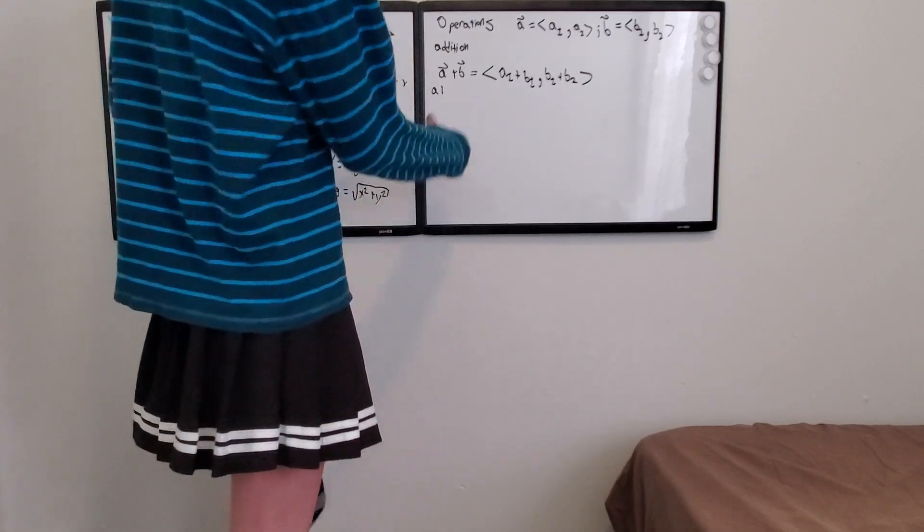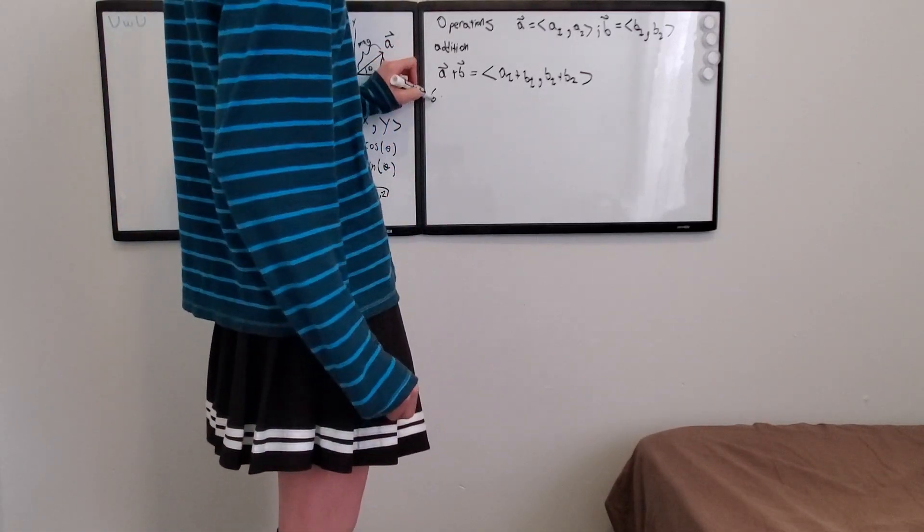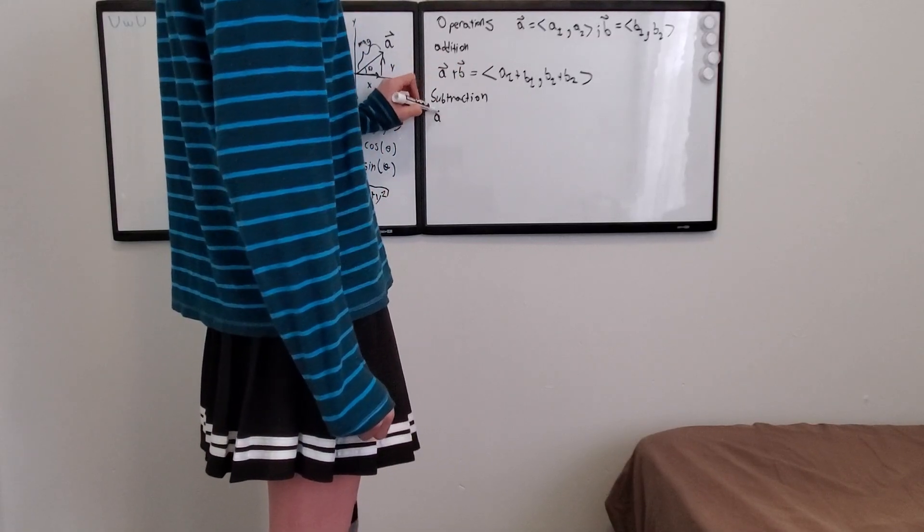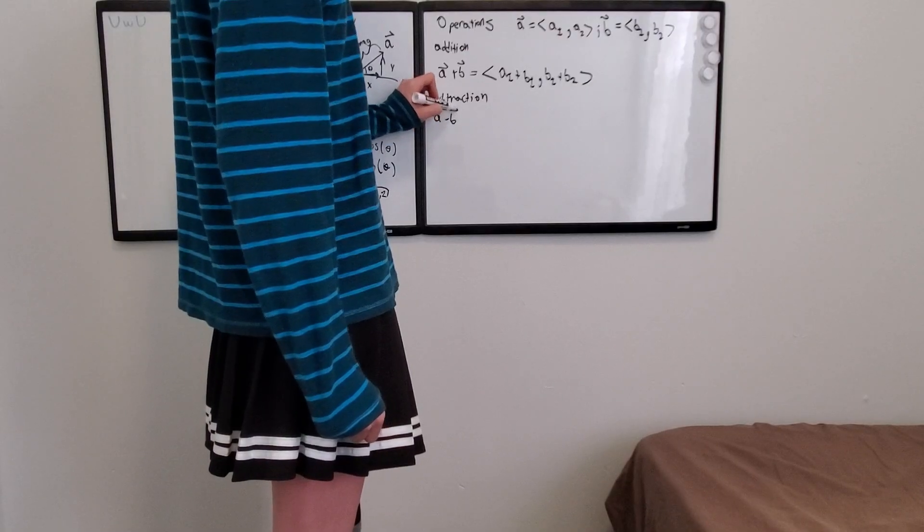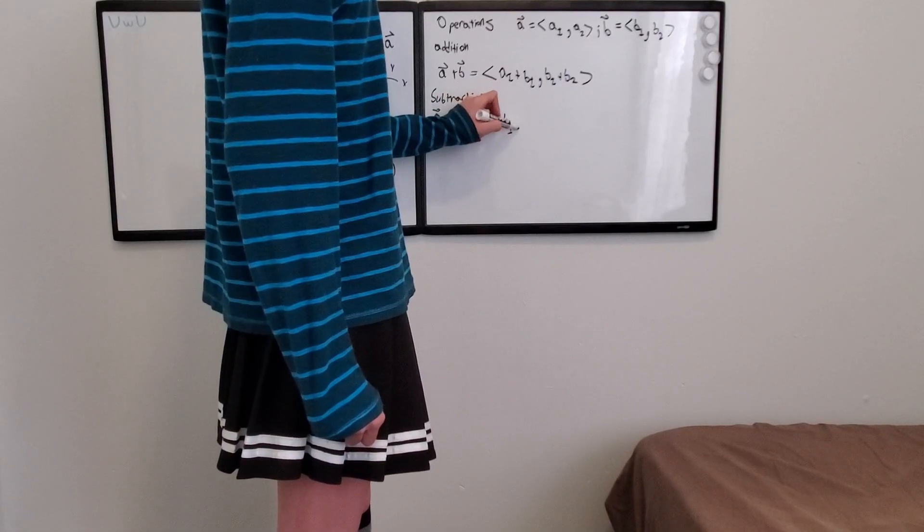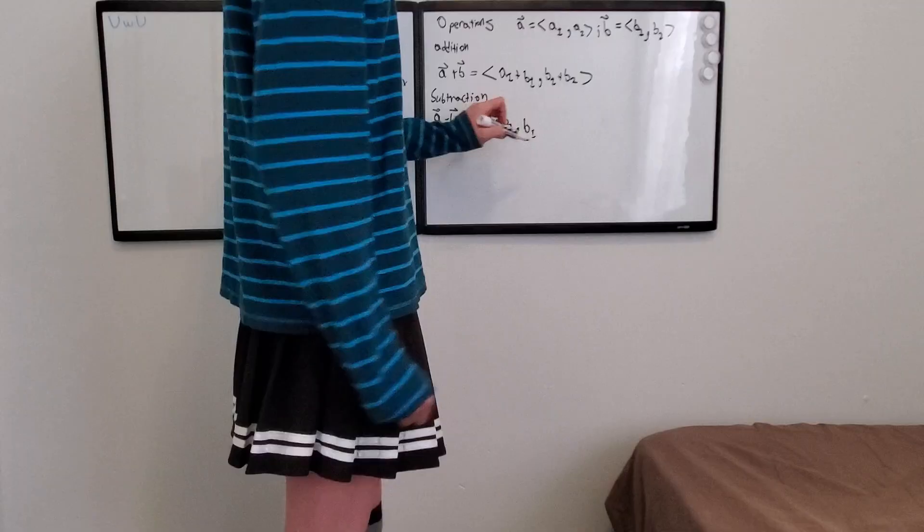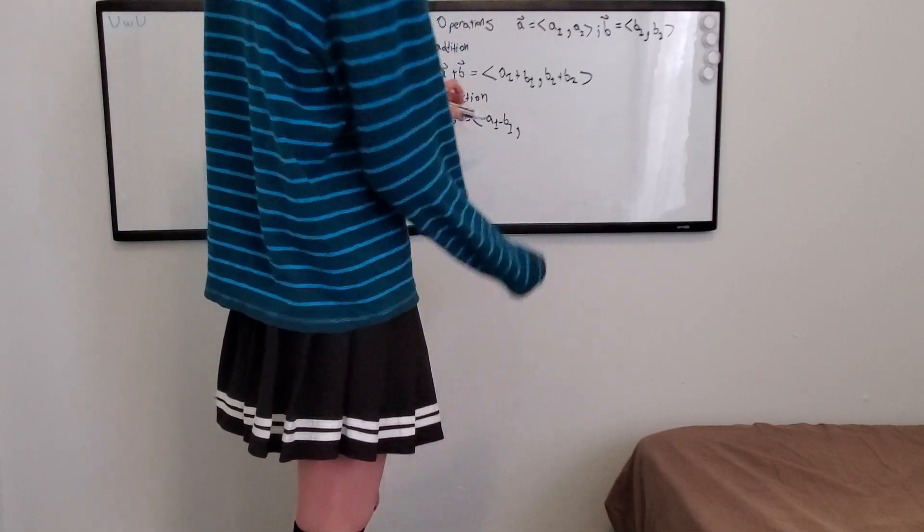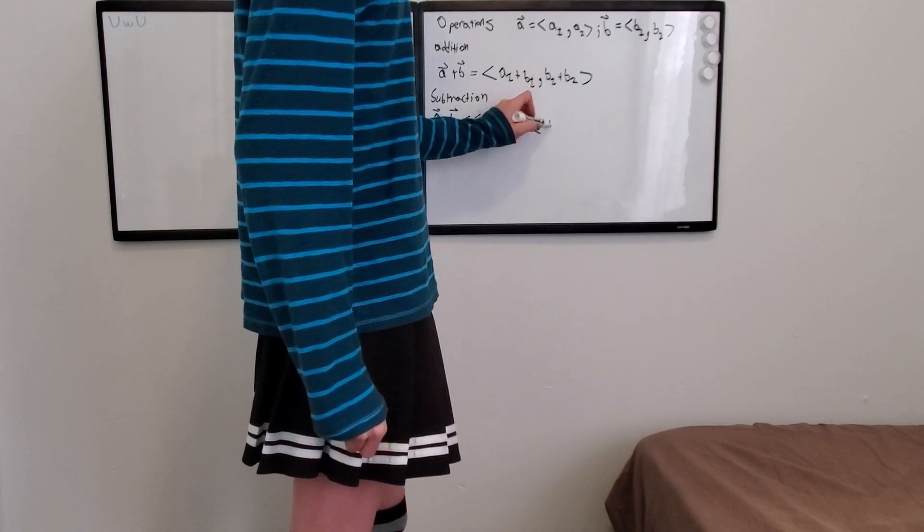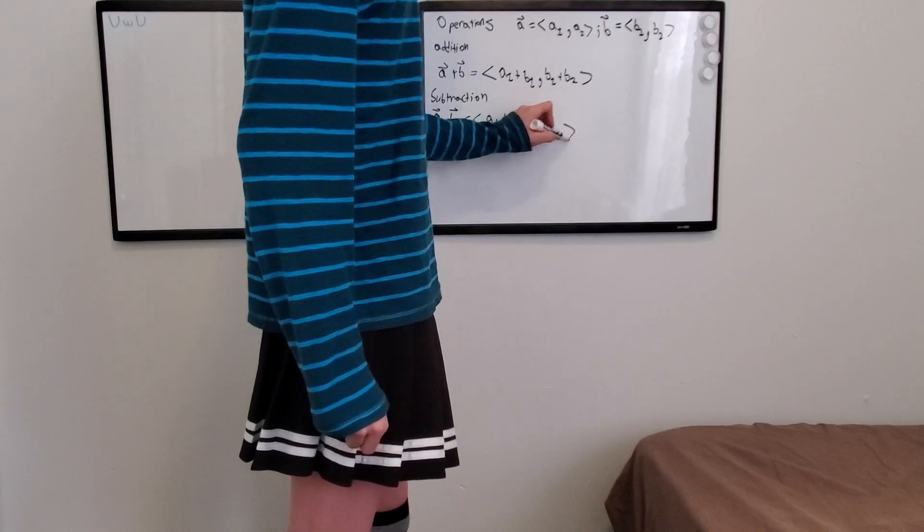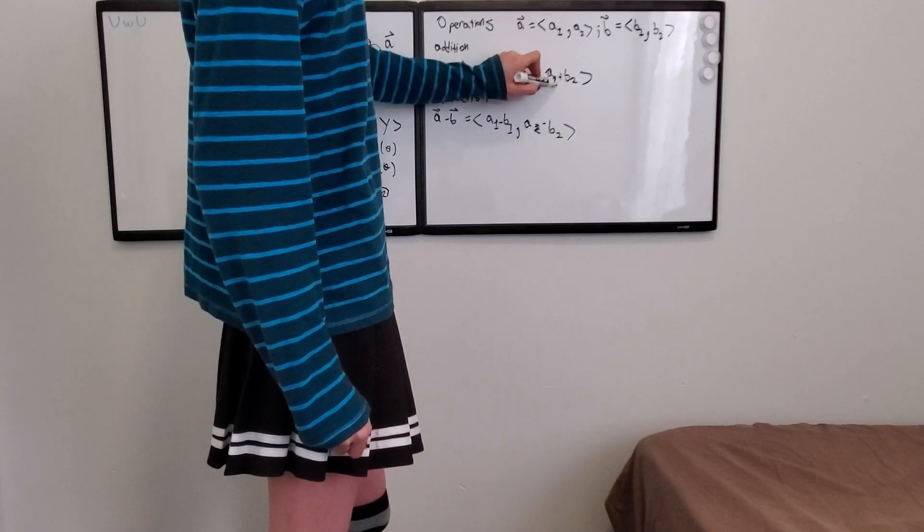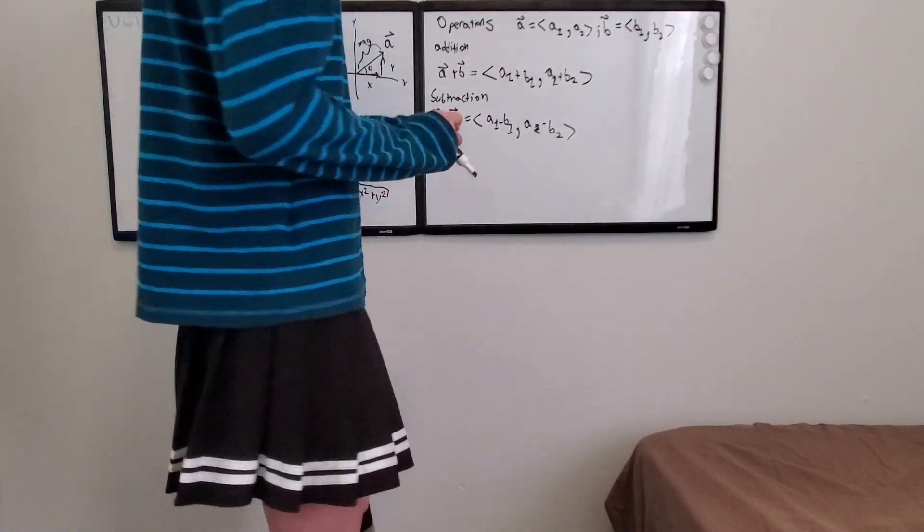If you want to do subtraction, you'd have A minus B. That's going to be equal to A1 minus B1, comma, A2 minus B2.